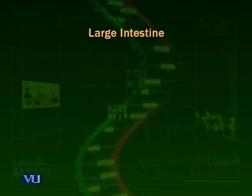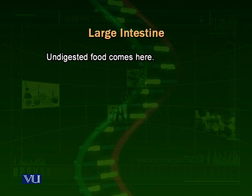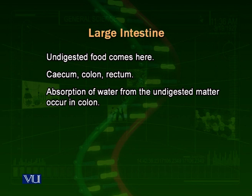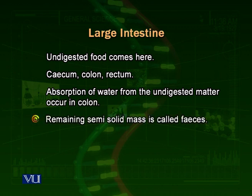The next part is the large intestine. The undigested food moves towards the large intestine, which is actually the last part of the alimentary canal. In the large intestine, there are also many folds, but it is not as highly folded as the small intestine. The cells of the large intestine absorb water from the undigested food, so that water is returned back to the body, and the remaining part is kept as a semi-solid material.